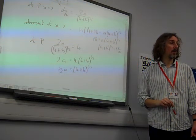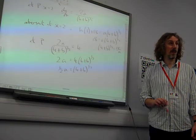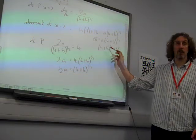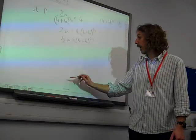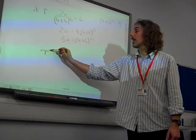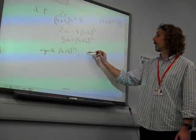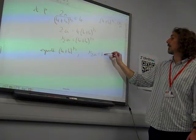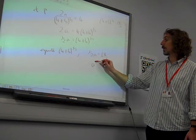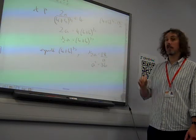I've got (4 plus b) to the half is equal to 18 over a. So those two things pretty much be the same, mustn't they? There, we've both got two expressions for (4 plus b) to the half. If we equate that, we've got a half a is 18 over a. So a squared is 36.